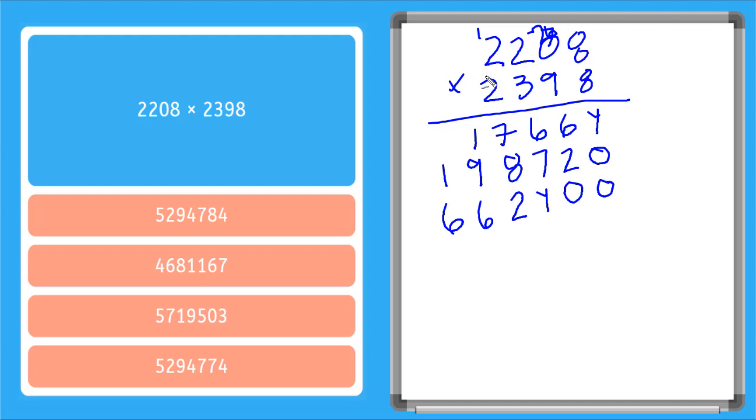Now I'm moving to my thousandths place in the bottom number. So I put a zero in the ones, a zero in the tens, and a zero in the hundreds place. Two times eight is 16. Now I have a one up here. Two times zero is zero, but I have that one. Two times two is four. And two times two is four. Alrighty.